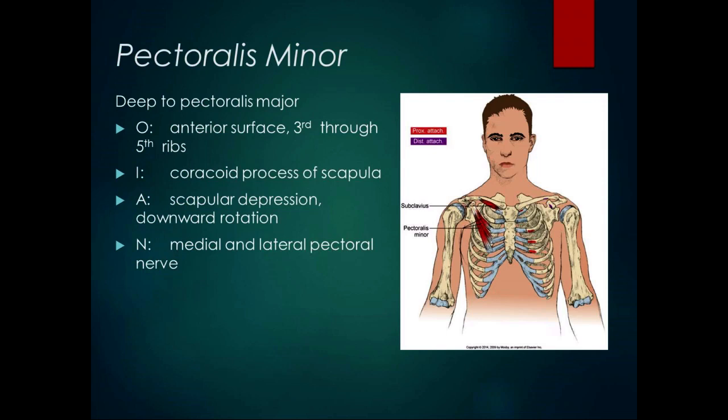I call pectoralis minor the "Eeyore of muscles" because it is a downer — it does scapular depression and downward rotation, everything's down. Its origin is the anterior surface of the third through fifth ribs, and its insertion is the coracoid process of the scapula, so when insertion moves towards origin, it depresses the scapula. It's deep to the pec major and gets the medial and lateral pectoral nerve. It also functions in downward rotation of the scapula. Its reversal of function: when the scapula is fixed, it can help lift the ribs for forced inspiration, so any muscle attaching to the ribs can have a secondary function in breathing.